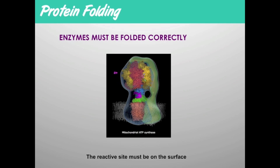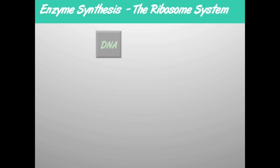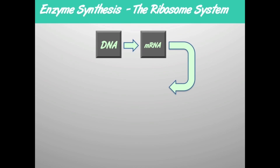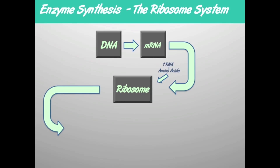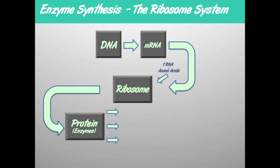The active site of the enzyme has to be on the surface of the enzyme. Enzymes are produced by the ribosome system, which requires a code — that code is DNA. One copy of the DNA double strand is called messenger RNA. That messenger RNA chain goes to the ribosome and is read like a ticker tape as it passes through. Transfer RNA molecules bring amino acids and add them in the right sequence as the protein chain forms. Some of those proteins are enzymes that produce purines, pyrimidines, sugars, and phosphate, from which we have our nucleic acids.